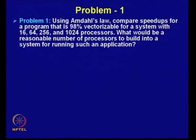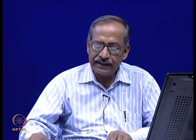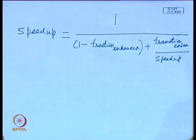The speed-up may arise because of pipelining or parallelism — various techniques we have already discussed. However, that may not be applicable to all parts of the program, or you may use a special processor like a floating point processor. In such a case, enhancement will take place only in a small part.